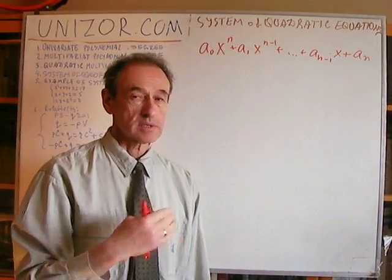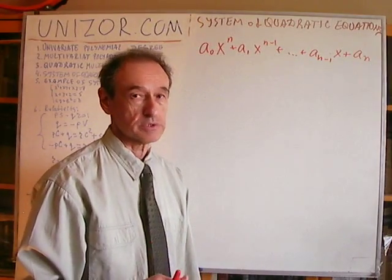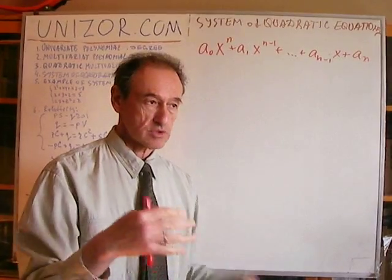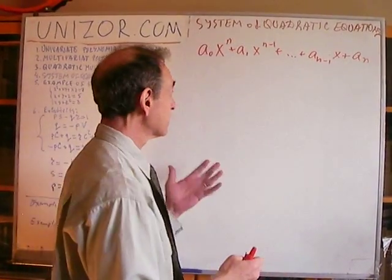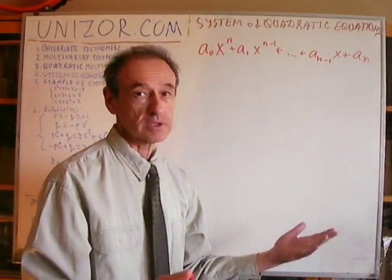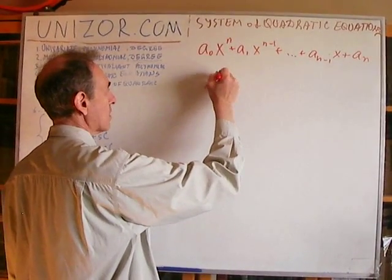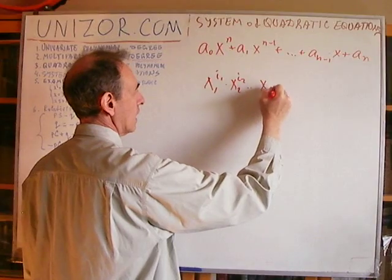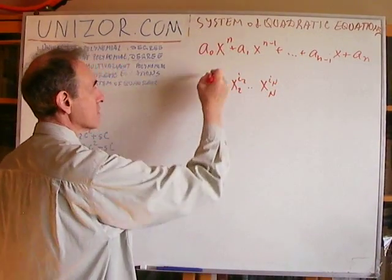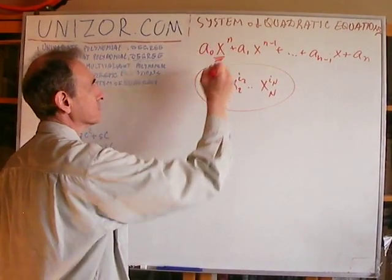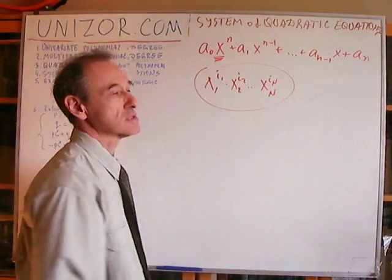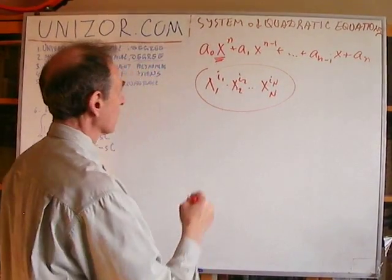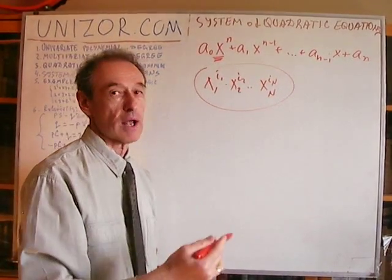I would like to extend this definition to multivariate polynomials. It's multivariate — it means there are multiple variables which participate in this polynomial. In some way it's similar, but instead of one variable x, we have multiple variables. So let's say you have x₁ to some power i₁ times x₂ to some power i₂, and so on, xₙ to power iₙ. This term is used instead of the single-variable term, with each variable x₁, x₂, ..., xₙ raised to certain powers. This is one single element from which we construct the multivariate polynomial.